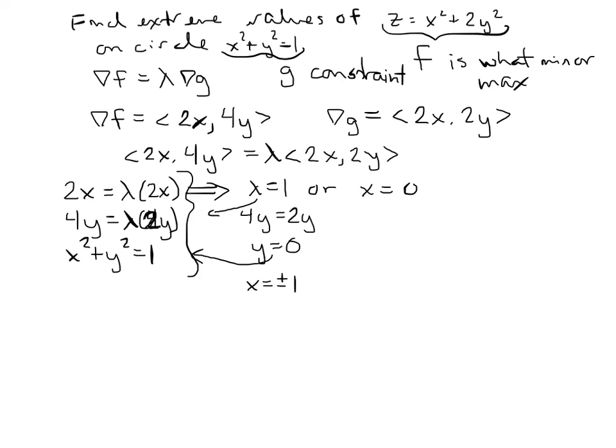if y is 0, then x has to equal plus or minus 1. This gives me two different points here. I've got 1, 0, and negative 1, 0.